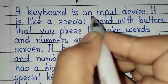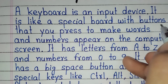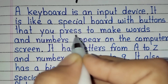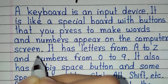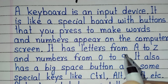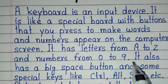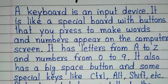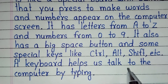A keyboard is an input device. It is like a special board with buttons that you press to make words and numbers appear on the computer screen. It has letters from A to Z and numbers from 0 to 9. It also has a big space button and some special keys like control, alt, shift, etc. A keyboard helps us talk to the computer by typing.